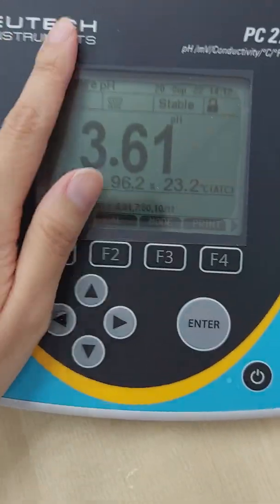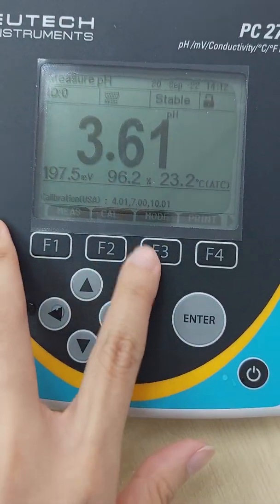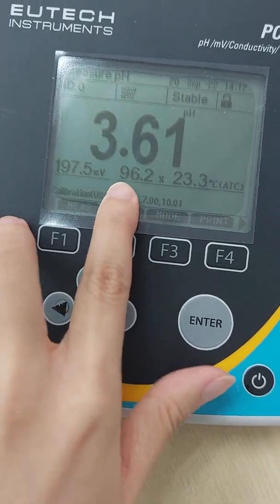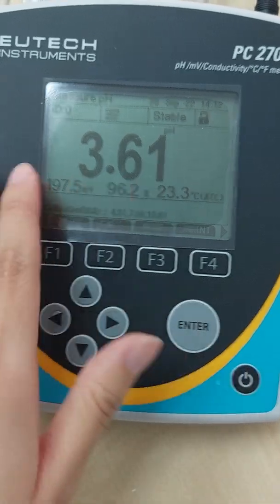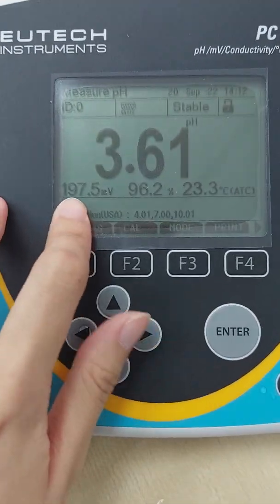Now look at the meter. Now we are at pH mode. Earlier we have done the calibration, so the slope will be shown here, and then this is the temperature, and this is the millivolt.